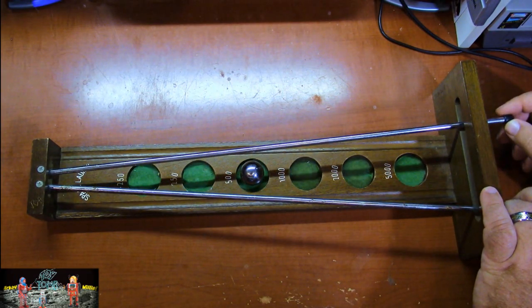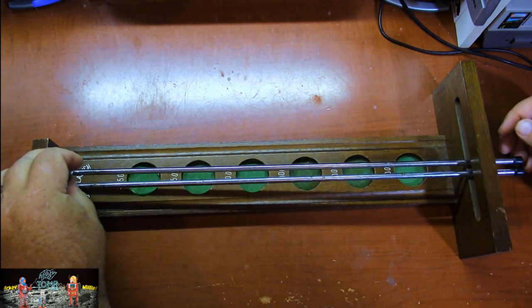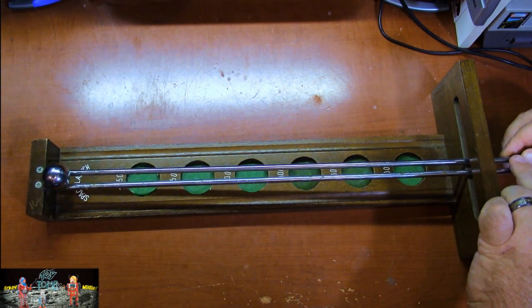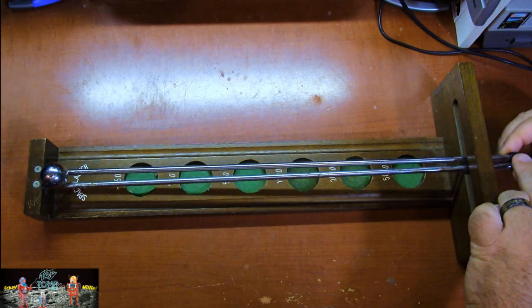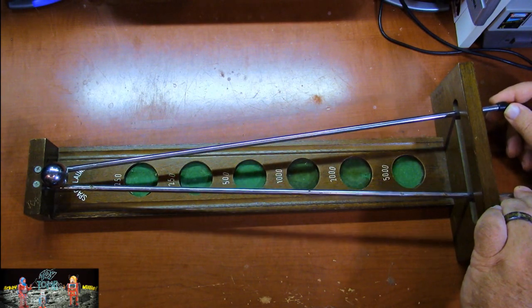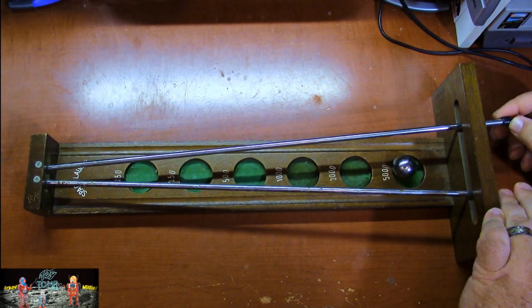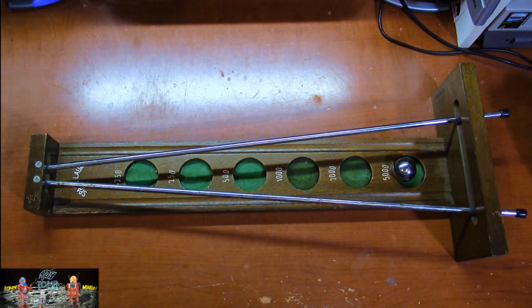Ooh, 500. Get some momentum going so you get it closer to the top. Okay, here we go. Here we go. 5,000. Willy has mastered Space Probe.